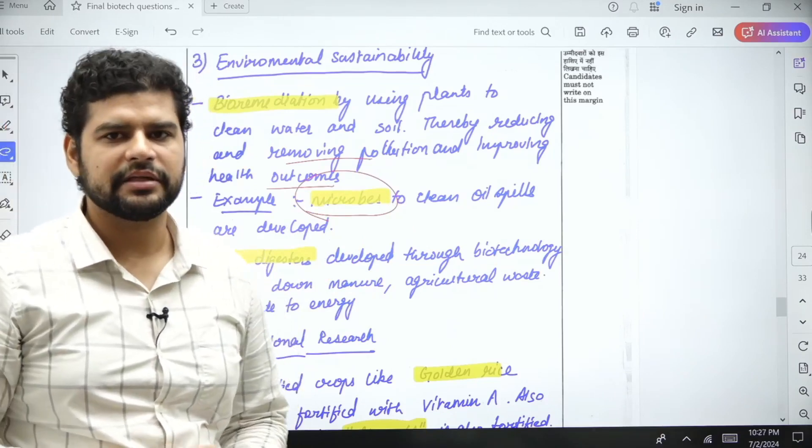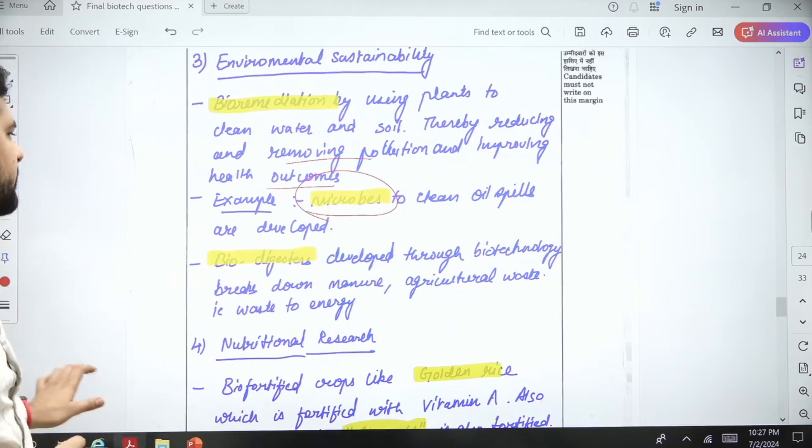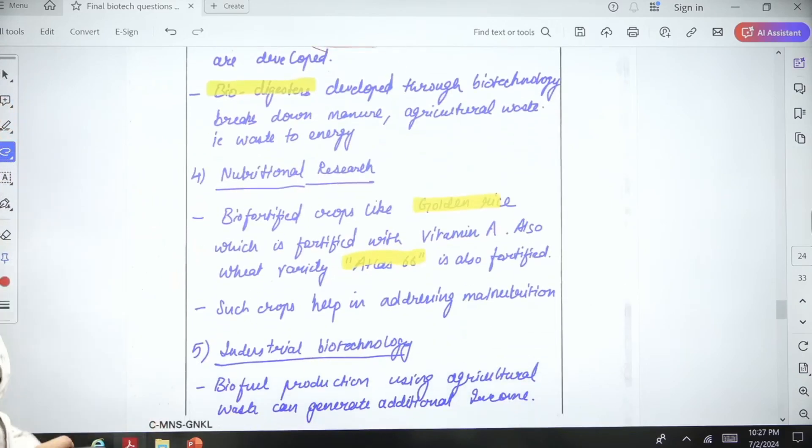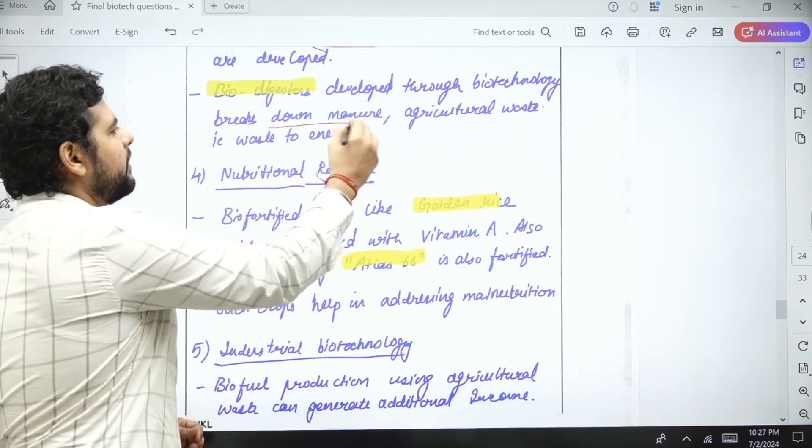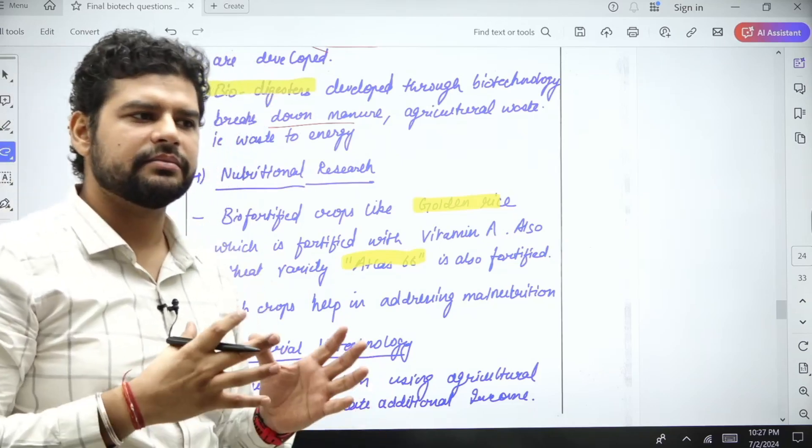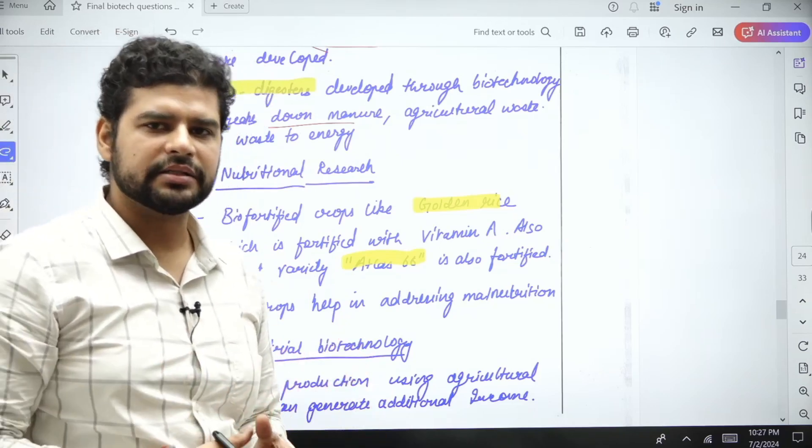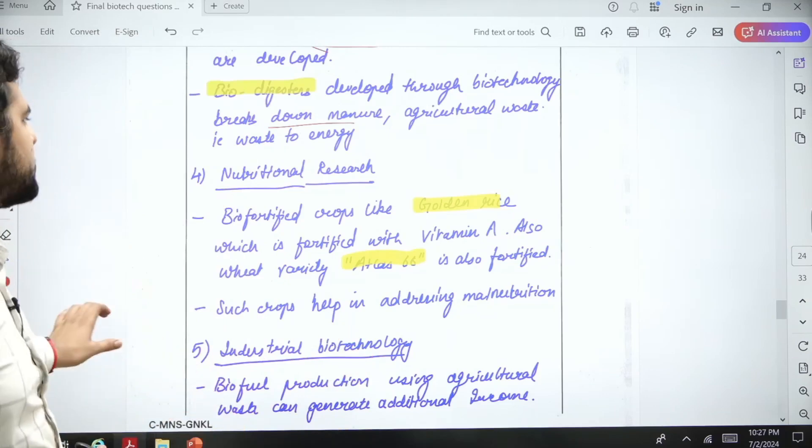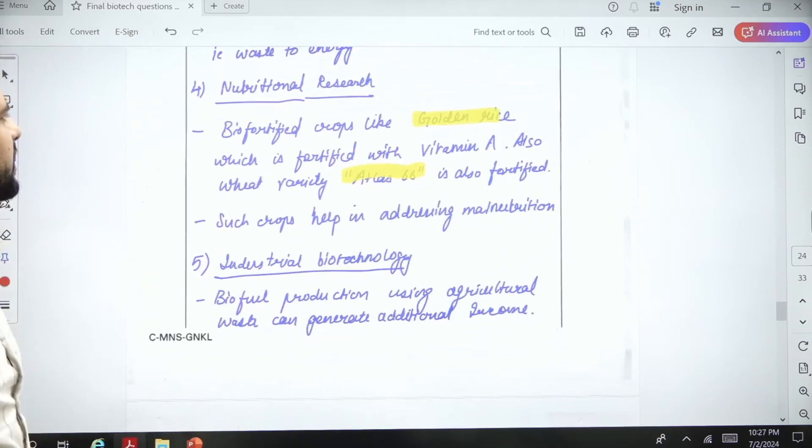For example, there are actual microbes used in today's world to help in oil spills. Even in India, they have been developed. Biodigesters are used to break down manure, converting organic matter into energy. This is already done, like biogas, for nutritional research.